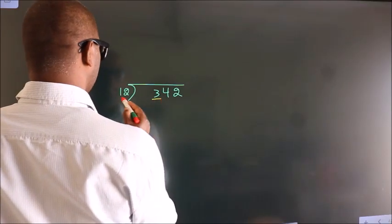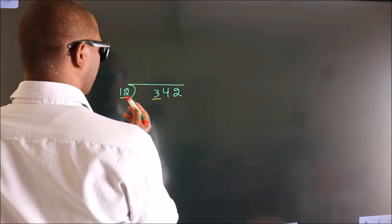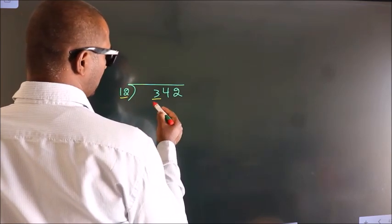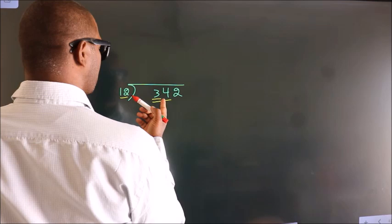Here we have 3. Here 12. 3 is smaller than 12, so we should take 2 numbers: 34. A number close to 34.